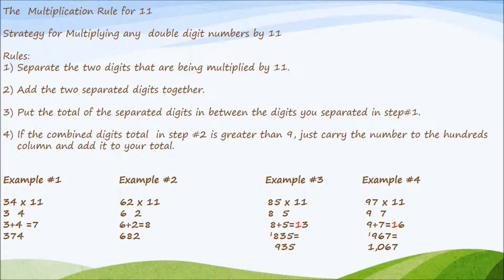Let's repeat that one again. We have 97 times 11. We're going to separate the 9 and the 7. We're going to add 9 plus 7 equals 16. We're going to place the 6 in between the 9 and the 7. We're going to carry that 1 to the hundreds column. We're going to add the 9 plus the 1 which is equal to 10. Our final answer is 1067.